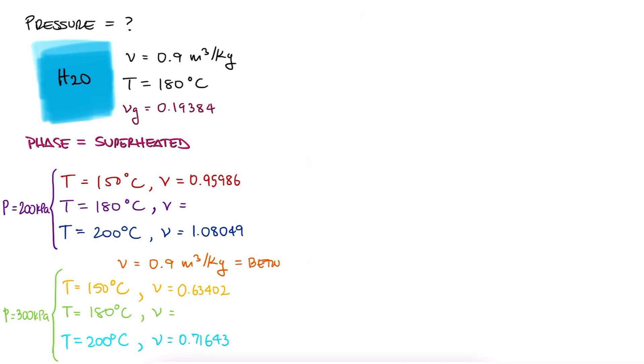With all of this information, we know that the pressure must be between 200 and 300 kilopascals. The first interpolation we do here is to find the specific volume of a temperature of 180 degrees for each of the two pressure values.